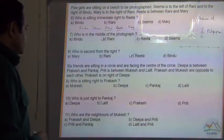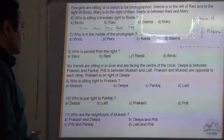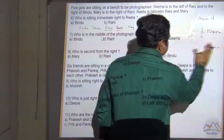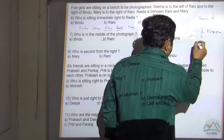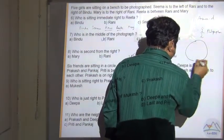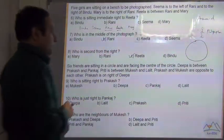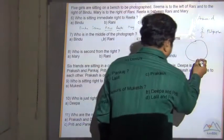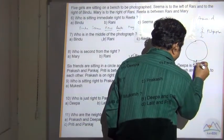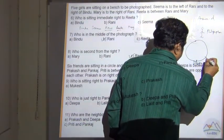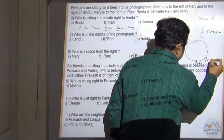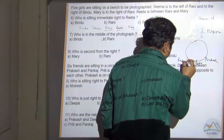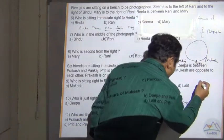Six friends are sitting in a circle and facing the center of the circle. Deepa is between Prakash and Pankar. This gives us one possible position arrangement.